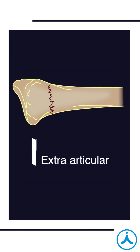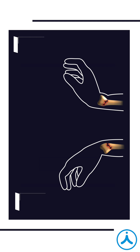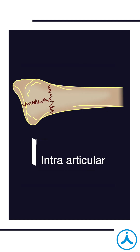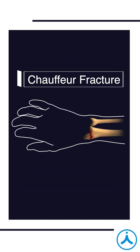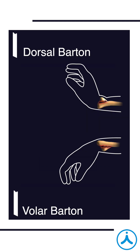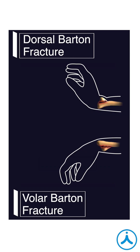To classify the type of distal radius fracture, we can segregate them into two types. The first one is extra-articular fracture — these are Colles fracture and Smith fractures. Then intra-articular fractures — those are Chauffeur's fracture, Die-punch fracture, and Barton fractures, including Volar or Dorsal Barton fractures.